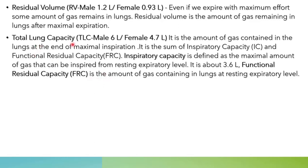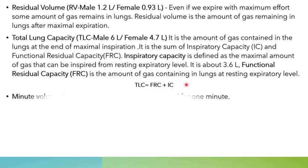Total lung capacity is the sum of inspiratory capacity plus functional residual capacity. Functional residual capacity is the volume of gas present in the lungs after one normal breath out, whereas inspiratory capacity is the amount of gas breathed in from that resting level. For a normal human male, total lung capacity comes around 6 liters, and for a normal human female, it comes around 4.7 liters. TLC can be written as FRC plus IC, where FRC is functional residual capacity and IC is inspiratory capacity.